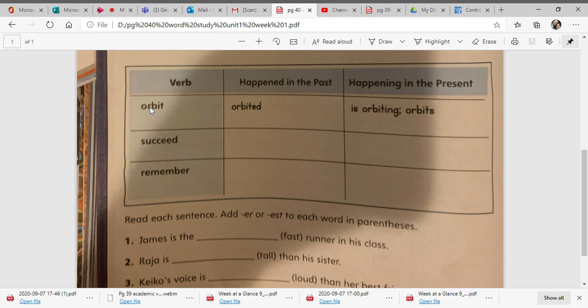So look at orbit. If orbit happened in the past, you add the ed, so it orbited. This space shuttle orbited the planet. If it's happening in the present, you would say it is orbiting or orbits. This space shuttle is orbiting the planet. This space shuttle orbits the planet.